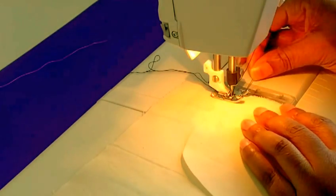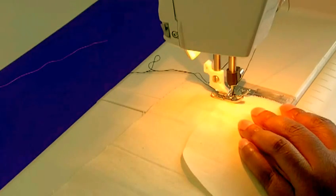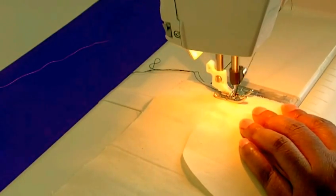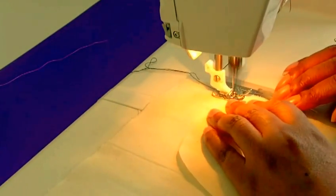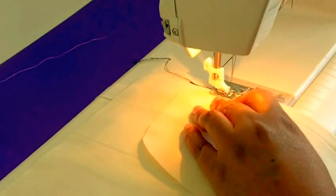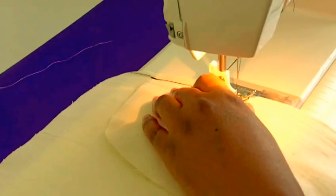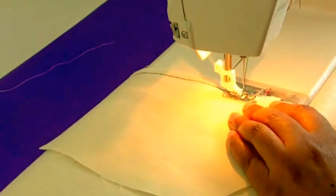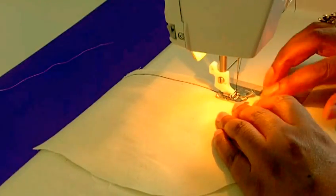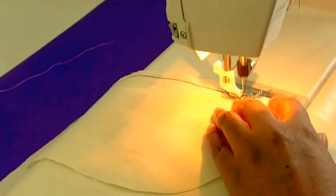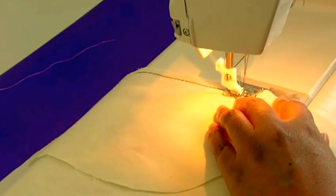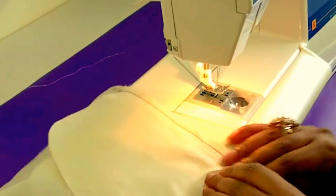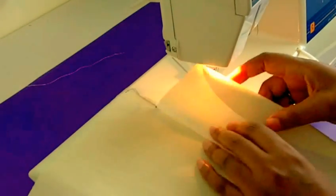And start sewing. I'm taking my pins out, don't sew over pins. I wouldn't recommend you actually do that. Remember we're doing one centimeter, three-eighths of an inch, and this is just to position the pocket within the seam allowance.